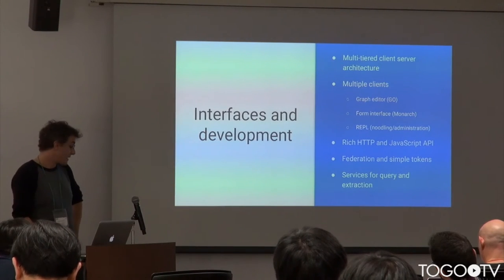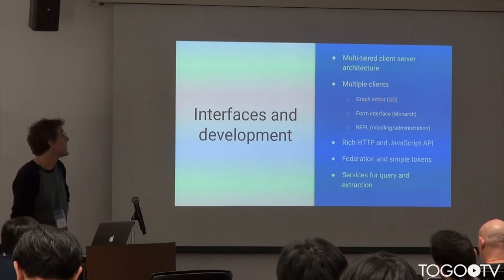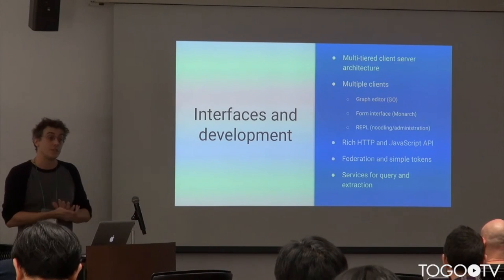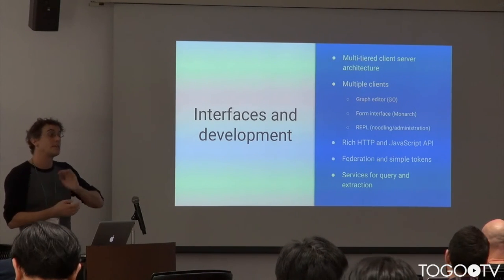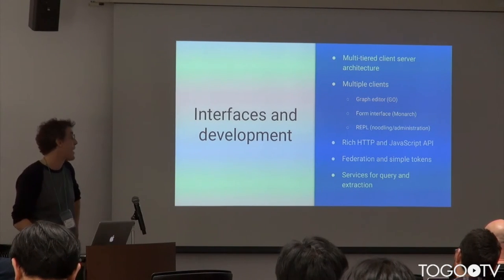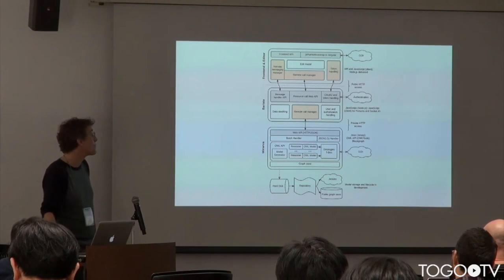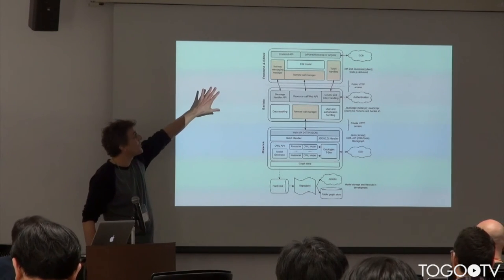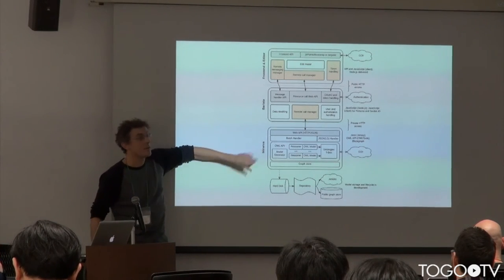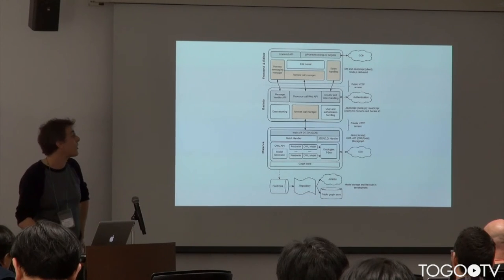So, for the stuff that's going to be more interesting here, let's talk about the interfaces and the kind of development software that we're doing under the hood. So it's a multi-tiered architecture, we have a lot of clients, we're working on different APIs, federation and tokens, so one of the important things is how do we know who's talking to us when you're using an external tool? How do we pass this information around? And also, we have services for query and extraction. So, this isn't meant to be super readable, we'll break it down, but I just want to show that it's basically three different layers. So there's a front-end layer, a messaging layer, and a back-end layer. And mostly what I want to talk about real fast is what's going on at the front-end and the API layer way up at the top.